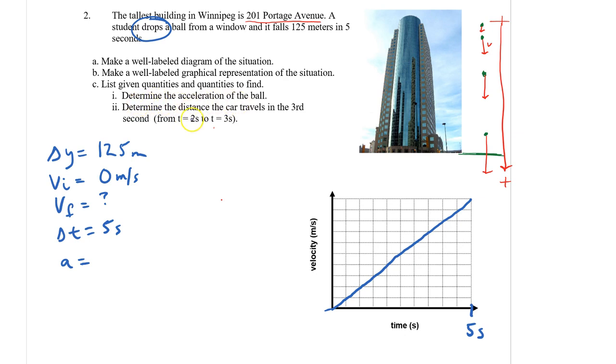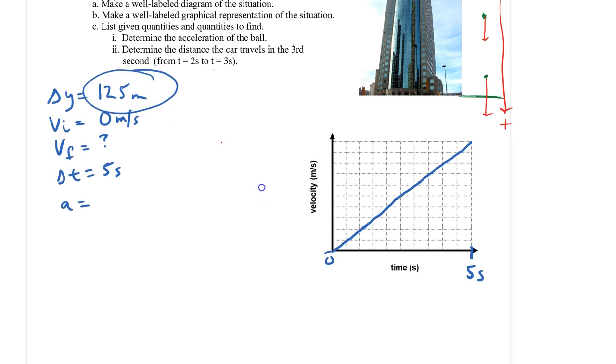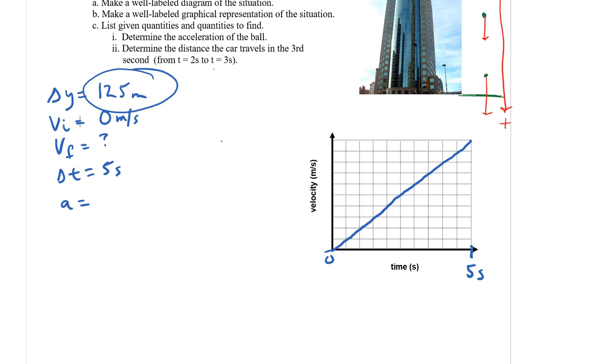It says determine the acceleration of the ball, and determine the distance it travels in the third second. So it starts from zero. Where does the 125 fit on this chart? We've got the zero, we've got the five seconds. That is the area. Just a reminder, displacement is equal to the area under the VT graph. The only difference is we're going to say that displacement is delta Y. Delta Y equals, it looks like a triangle to me, so it's one half times the base times the height.